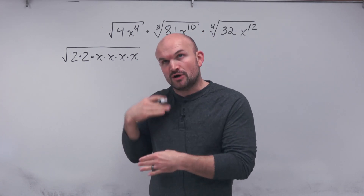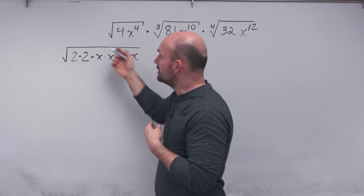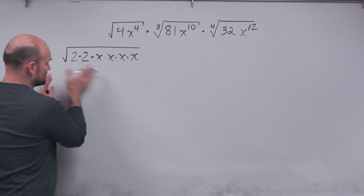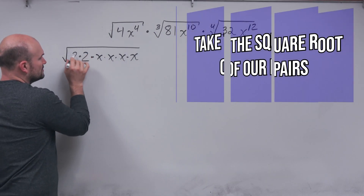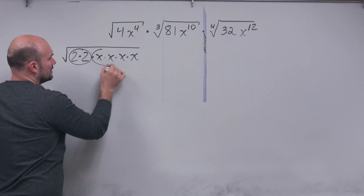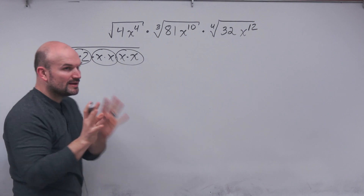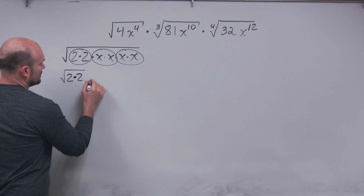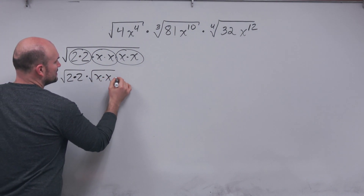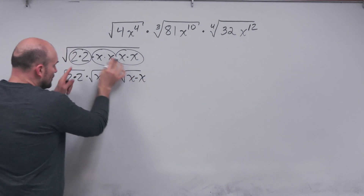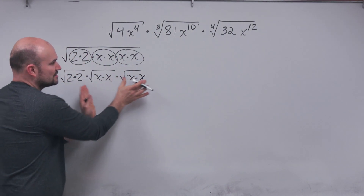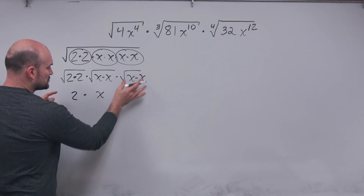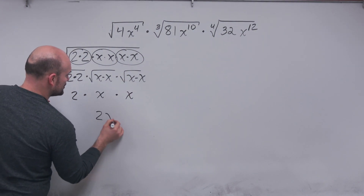When we're trying to take the square root of this, we're asking what values or numbers multiply by themselves. An easy way to visualize this is to take the square root of our pairs: 2 times 2, x times x, and x times x. We can break this up into the square root of 2 times 2, times the square root of x times x, times the square root of x times x. The square root of 2 times 2 is 2, the square root of x times x is x, and the square root of x times x is x. We can simplify that to 2x squared.